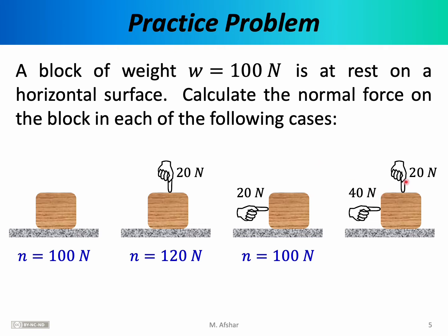In the fourth scenario, two people exert forces on the box. One pushes to the right with 40 newtons and another pushes downward with 20 newtons. Weight still pulls the box down. The normal force reacts to weight and the downward finger force, but does not react to the horizontal force. The magnitude of the normal force is 120 newtons — adequate to cancel weight and the 20-newton downward push, but it does not respond to the 40 newtons applied horizontally.